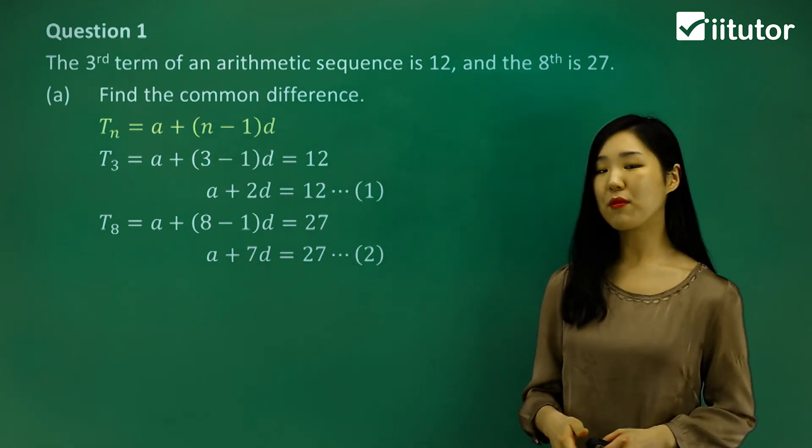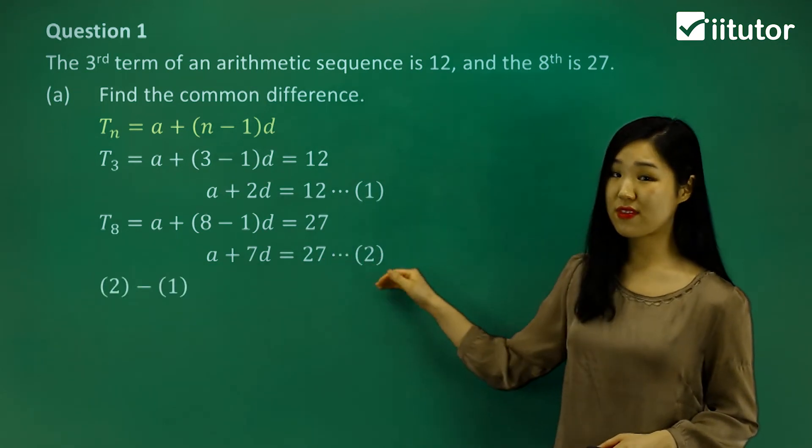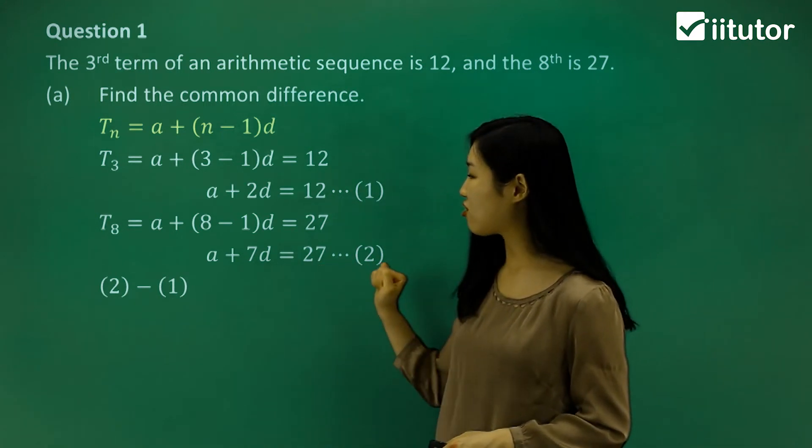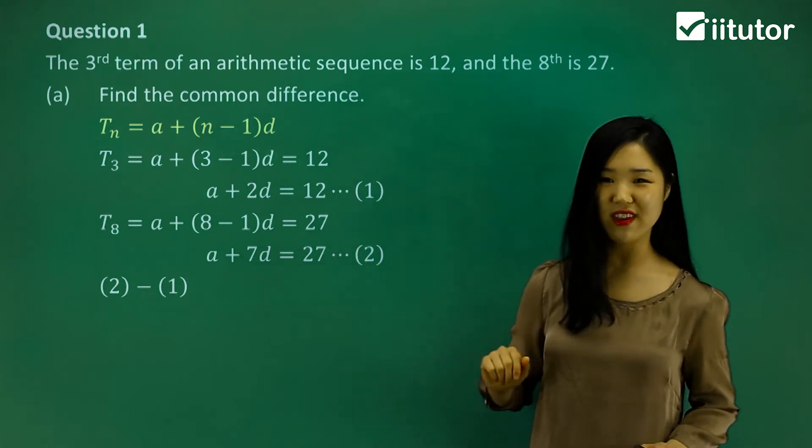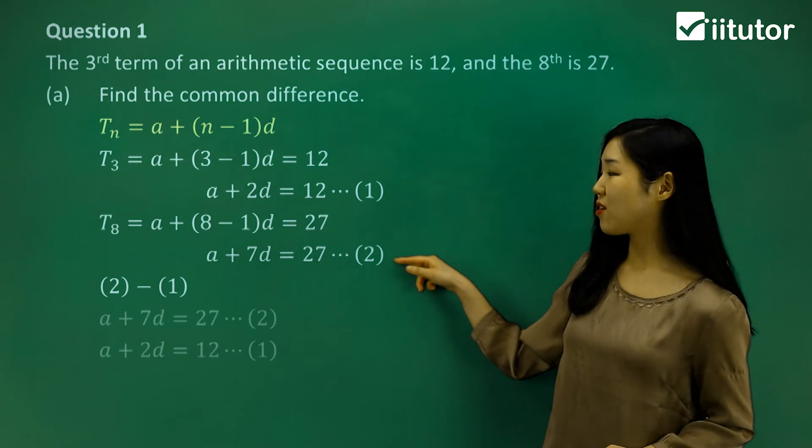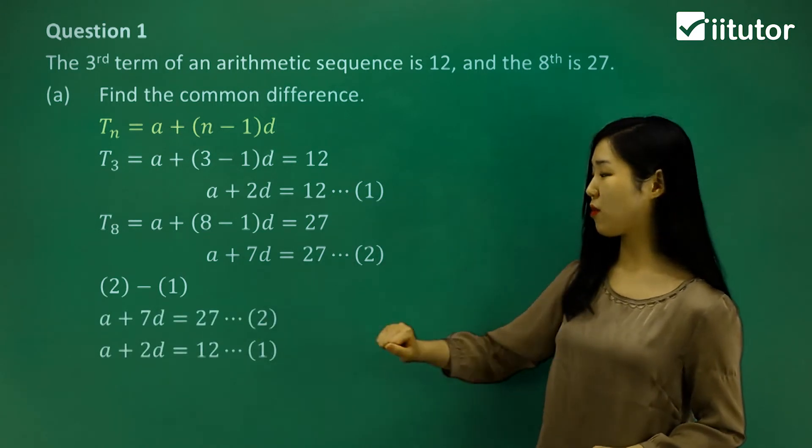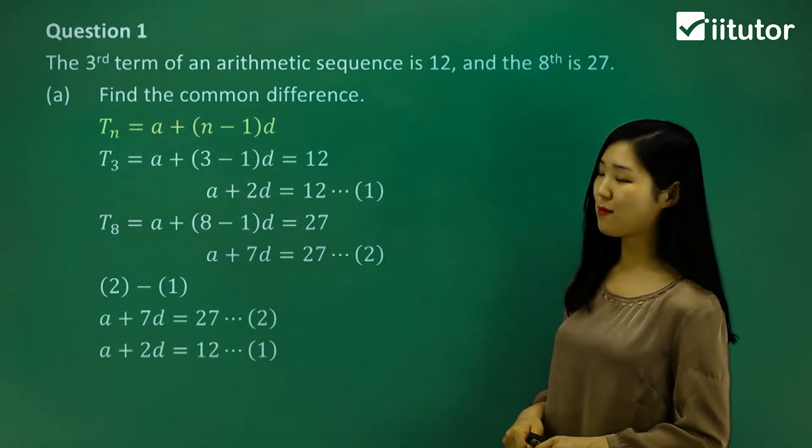I'm going to subtract the first one away from the second one because the second one has larger values, so I want to avoid having negative values. Let's do the second one minus the first one. I put the second one first and the first one next, and then we're going to subtract.